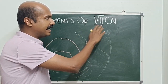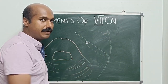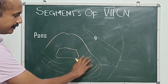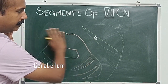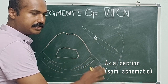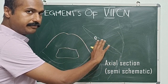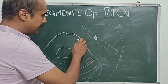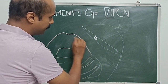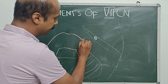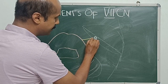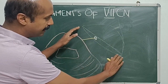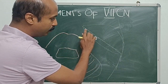We are going to learn the segments of the seventh cranial nerve, or the facial nerve. This is a semi-schematic axial section showing the pons and cerebellum, with the cranial nerve exiting from the pons and going to the temporal bone. The seventh nerve exits from the cerebellopontine angle and enters into the petrous part of the temporal bone, shown with faded lines.